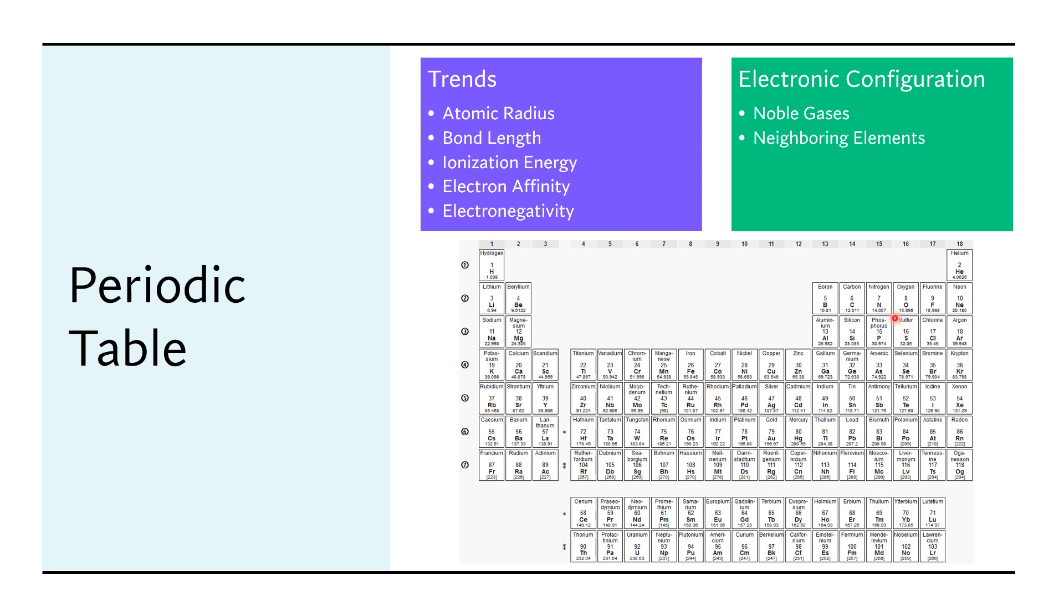For example, questions like, which of the following elements has an electronic configuration closest to that of neon? Or questions like, how would you write the electron configuration of chlorine using the neon electron configuration, or the argon electron configuration? Without a periodic table, that's really, really hard to answer, especially if you don't remember anything about the arrangement of the elements in the table.